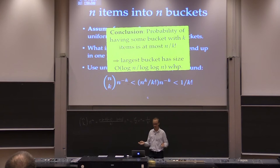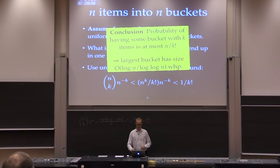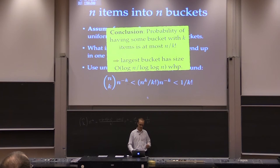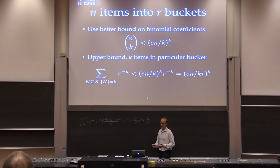How large does k have to be for this to be very small? The answer turns out to be around log n divided by log log n — you can do the math with Stirling's approximation to the factorial. So the largest bucket has size log n over log log n. Sometimes you have many fewer buckets than items, and in the general case we actually need a better bound on the binomial coefficient.